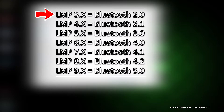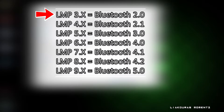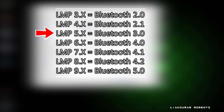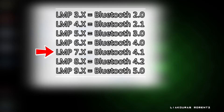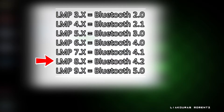If you see LMP 3.something, that is Bluetooth 2.0. LMP 4.something is Bluetooth 2.1. LMP 5.something is Bluetooth 3.0. LMP 6 is Bluetooth 4.0. LMP 7 is Bluetooth 4.1. LMP 8 is Bluetooth 4.2. And LMP 9.something is Bluetooth 5.0.